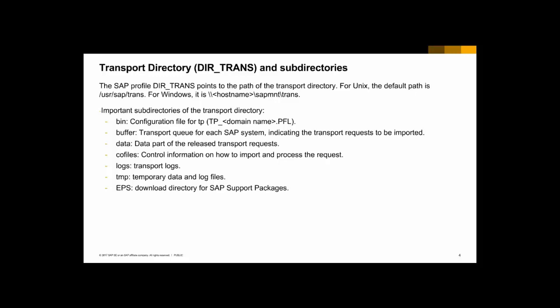Now about the transport directory, the Dirtrans, and all the subfolders. The Dirtrans is an SAP profile that points to the path of the transport directory. For Unix, we have /usr/sap/trans, and for Windows, we have it with the host name. The Dirtrans has some subfolders: the bin subfolder contains the configuration of the profile; the buffer directory holds all transports in the queue; the data directory stores the transport request data and the profile with import process information. We also have the log directory, the TMP, and the EPS directory for support packages.